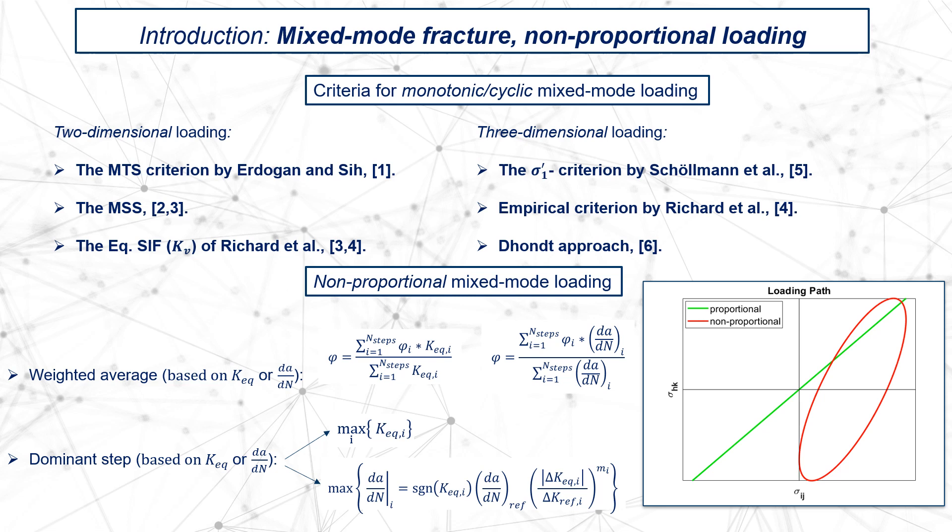One way is to calculate the mission deflection angle as a weighted average of the deflection angle seen in the individual steps. The weight can be either the equivalent K factor or the crack growth rate da/dN. Alternatively, a dominant step criterion could be used. Such a criterion postulates that the deflection angle of the mission is the same as the deflection angle of the dominant step. The latter is defined as the step with the highest equivalent K factor or crack propagation rate. Using da/dN as weight provides the possibility to allow for temperature-dependent material properties.